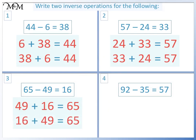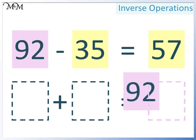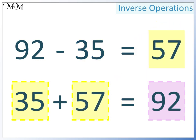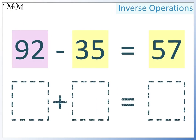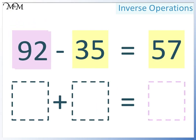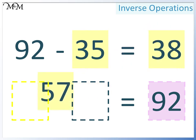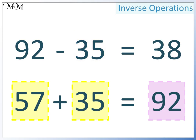Question 4: 92 take away 35 equals 57. We are writing this as an addition, so the largest number must go here. Either of the two smaller numbers can go here; this time we'll have 35, and so 57 goes here. 35 add 57 equals 92. Again, the largest number must go here. Either of the two smaller numbers can go here; this time we'll have 57, and so 35 must go here. 57 plus 35 equals 92.